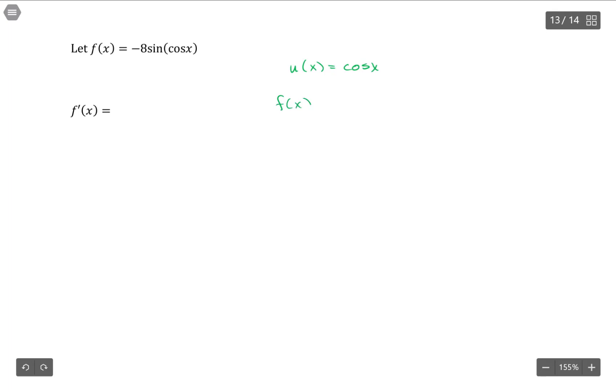Now f of x looks like negative 8 sine of u, which is a lot nicer than what we had originally. So the derivative of f, well, I can do this. I know how to do a chain rule. So this is negative 8.